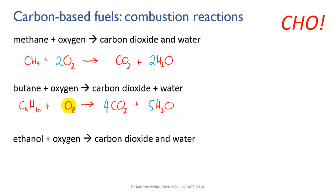The last thing to do is the oxygen. We've got two on the left, and on the right we've got four times two equals eight oxygens from the carbon dioxide, and five oxygens from the water — that's a total of thirteen. So we've got thirteen oxygens on the right and two on the left. How many oxygen molecules do we need to provide thirteen oxygen atoms? We need seven and a half molecules, or thirteen over two.